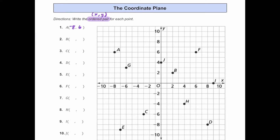Now what about B? For B we start at the origin, move two spaces to the right — so positive two — and then two spaces up to get to where B is, so that's positive two. So to the right is positive and up is positive.